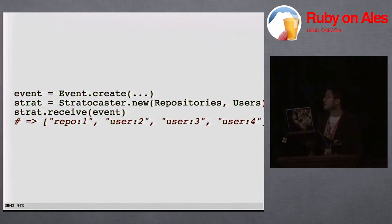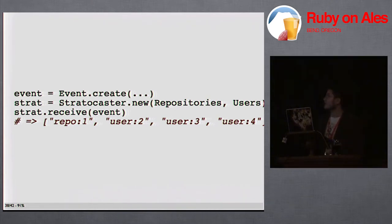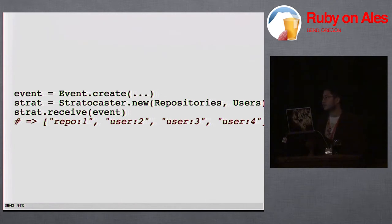The nice thing about this is we can be a lot more flexible with what kind of timelines we use. With the database setup, I have to index everything in MySQL, and changing those indexes when you have something like a billion rows takes forever. With this, I can just decide I want to add a feed for a network view of a repo, add another Stratocaster timeline object, and it'll start being populated.